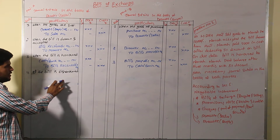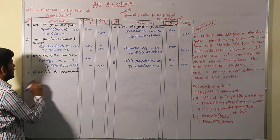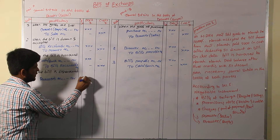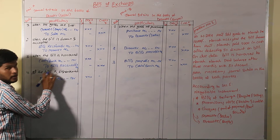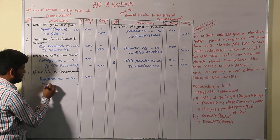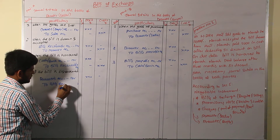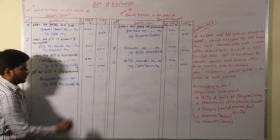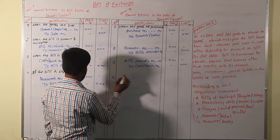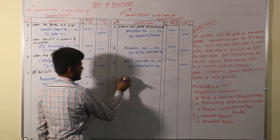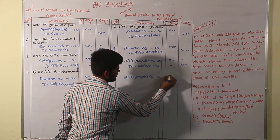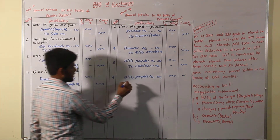If the bill is dishonored by the buyer, we have to enter the entry in the books of the drawer. The drawer has a dishonored bill — not an endorsed bill, not a renewed bill. So if the bill is dishonored, we have to debit bills receivable account. And the same entry in the drawee's books: bills receivable comes as bills payable, and bills payable account is credited while drawing comes down as royal.